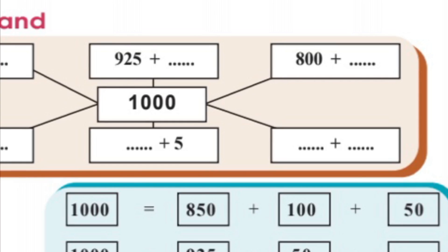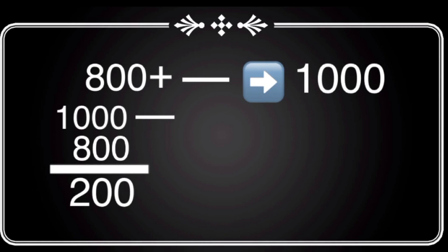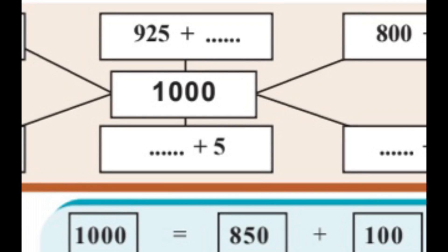800 plus blank gives 1,000. That is 1,000 minus 800, which equals 200. Next: blank plus 5 gives 1,000. Here the second number is given, the first is blank. That is 1,000 minus 5, which equals 995. So 995 is the answer.